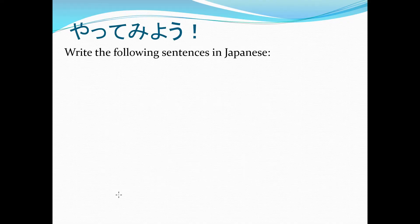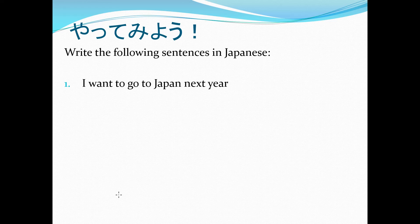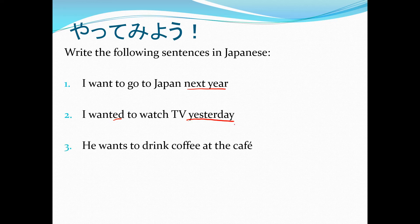Write the following sentences in Japanese. I want to go to Japan next year. Next year is non-specific time. Please do not use に. You can also omit the 私 if you want. I wanted to watch TV yesterday. Be careful of tense on this one. Wanted. And yesterday again is non-specific time. No に. He wants to drink coffee at the cafe.